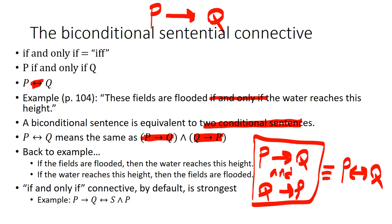The if-and-only-if connective by default is strongest. So with an example involving three sentential connectives, the biconditional being strongest means we put parentheses around 'if P then Q' and around 'S and P,' because the strongest connective must always be outside the parentheses.